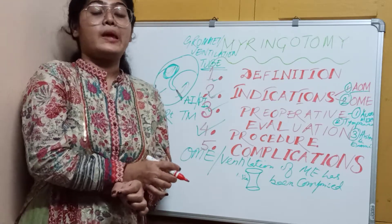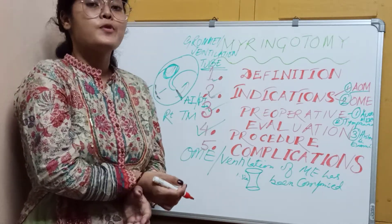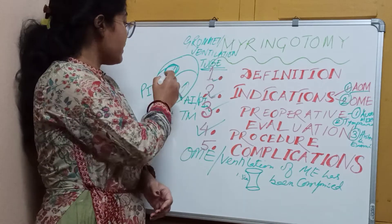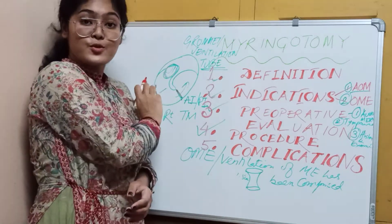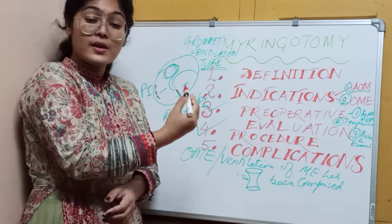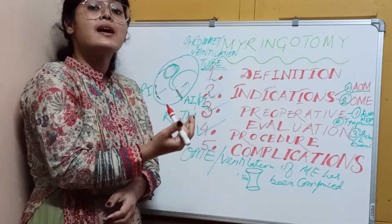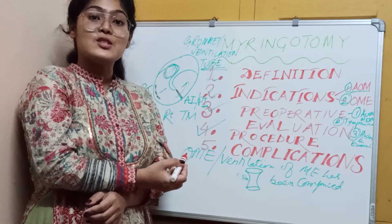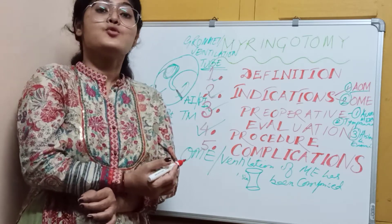Do remember this point. The question may arise: why avoid the posterosuperior quadrant? In the diagram you can see that behind the posterosuperior quadrant area you will find the ossicles. When you visualize the tympanic membrane you can see the shadow of the ossicles, so there is a high chance of injuring the ossicles if you make an incision there. That is why incisions are not made in the posterosuperior quadrant.